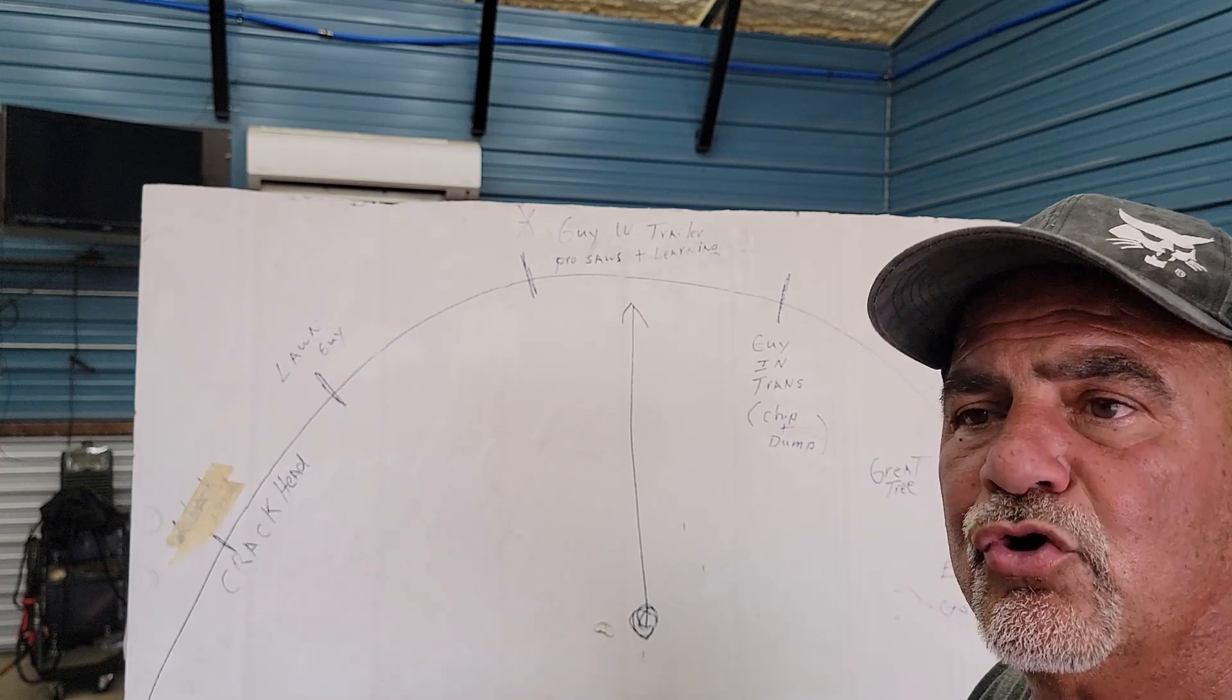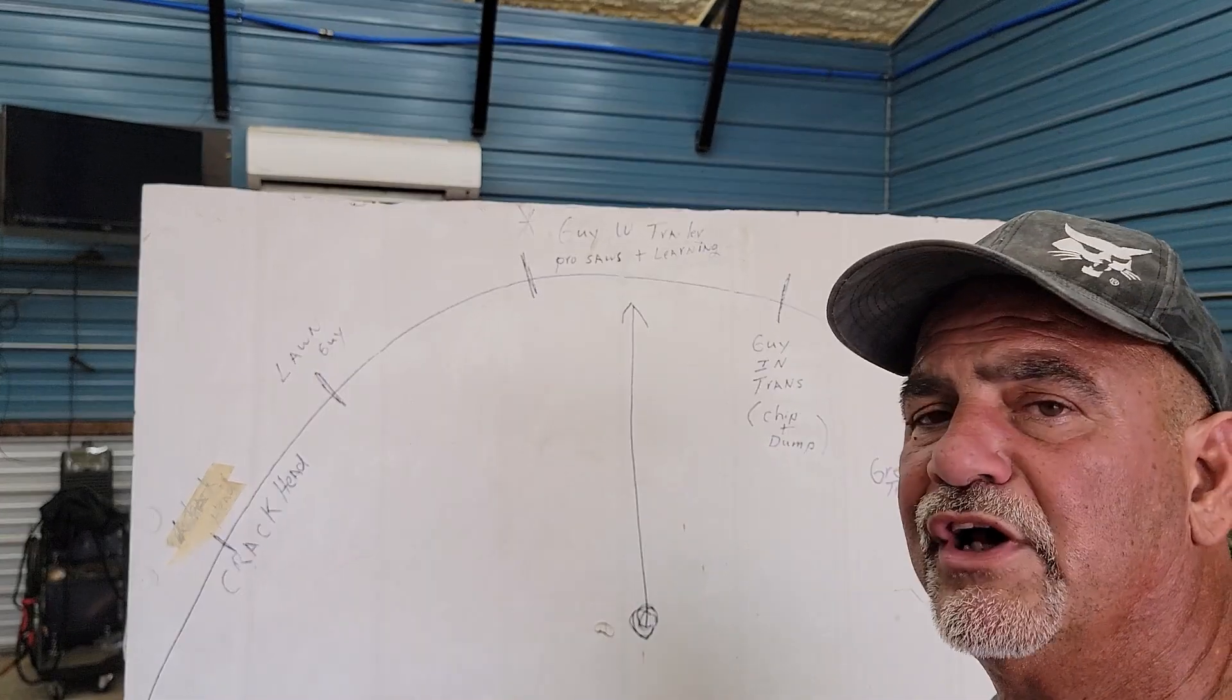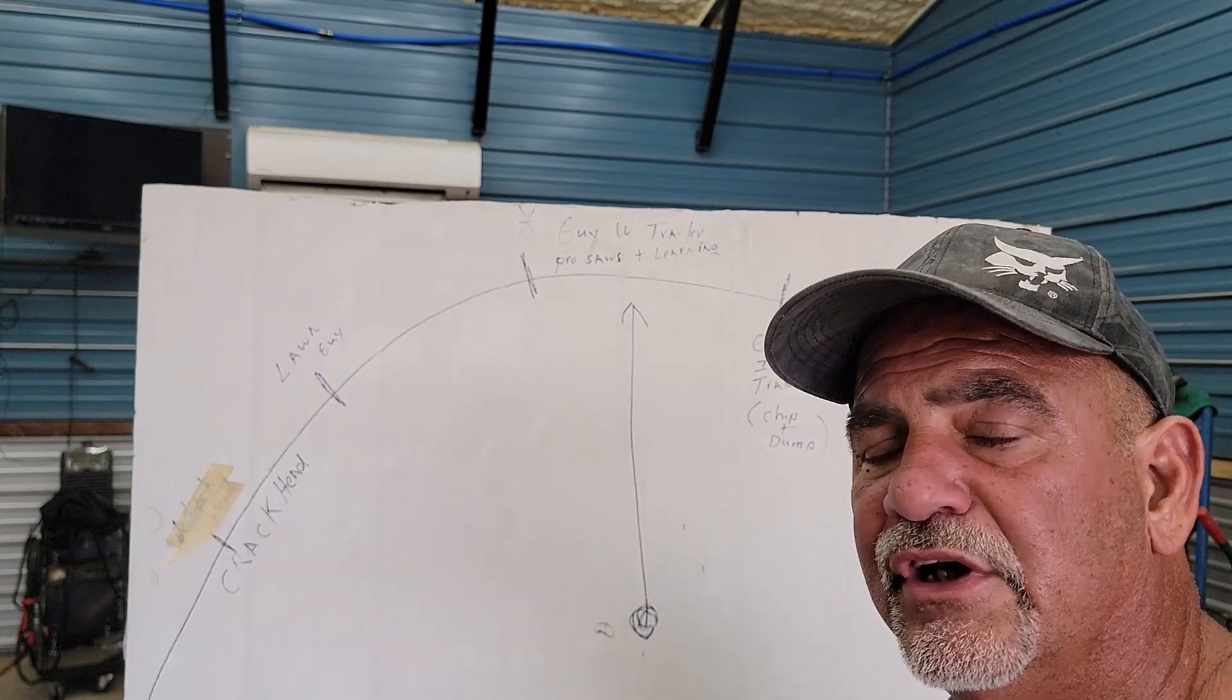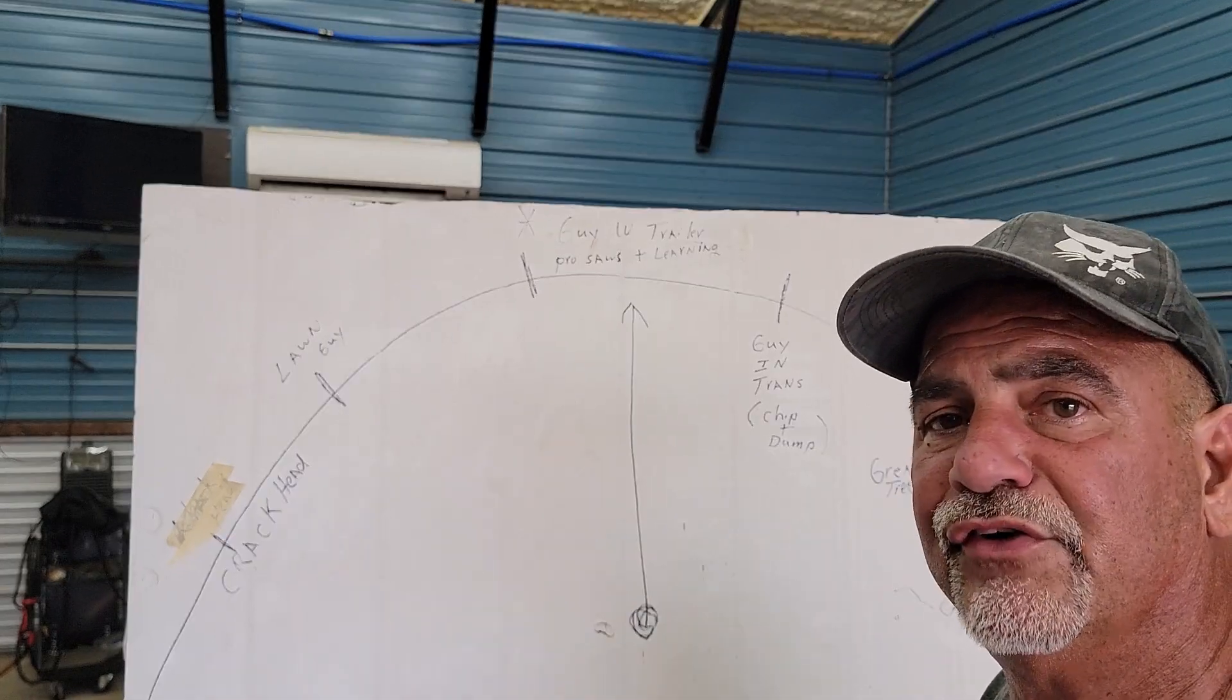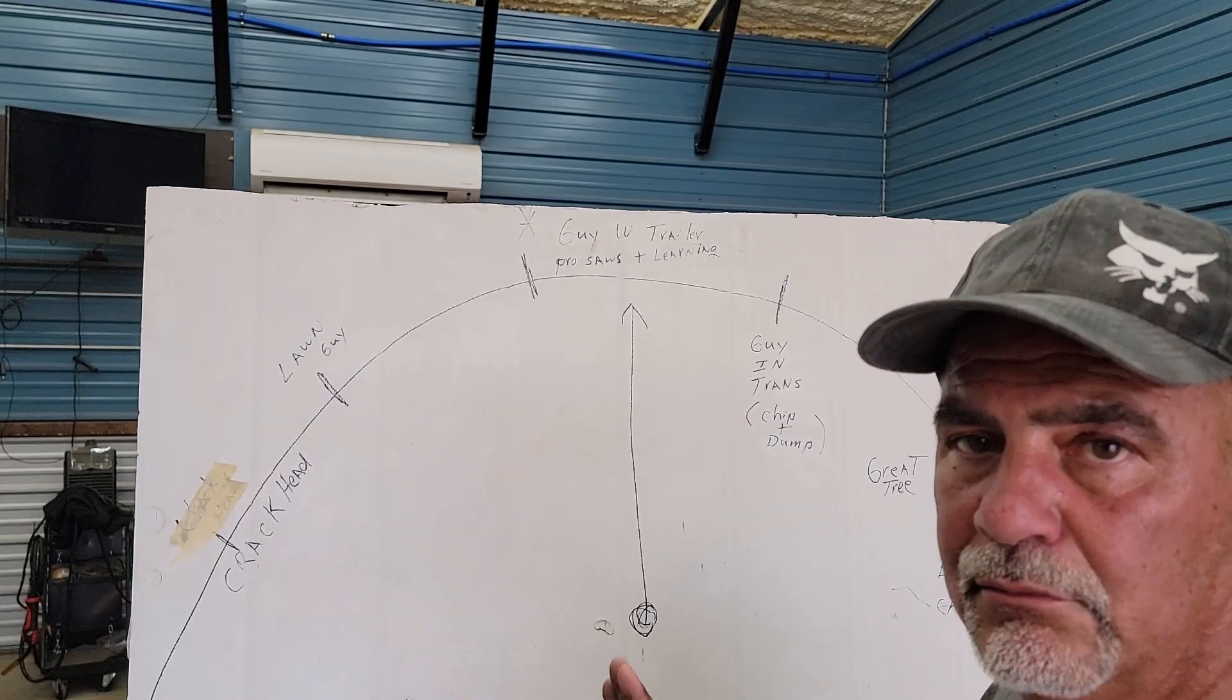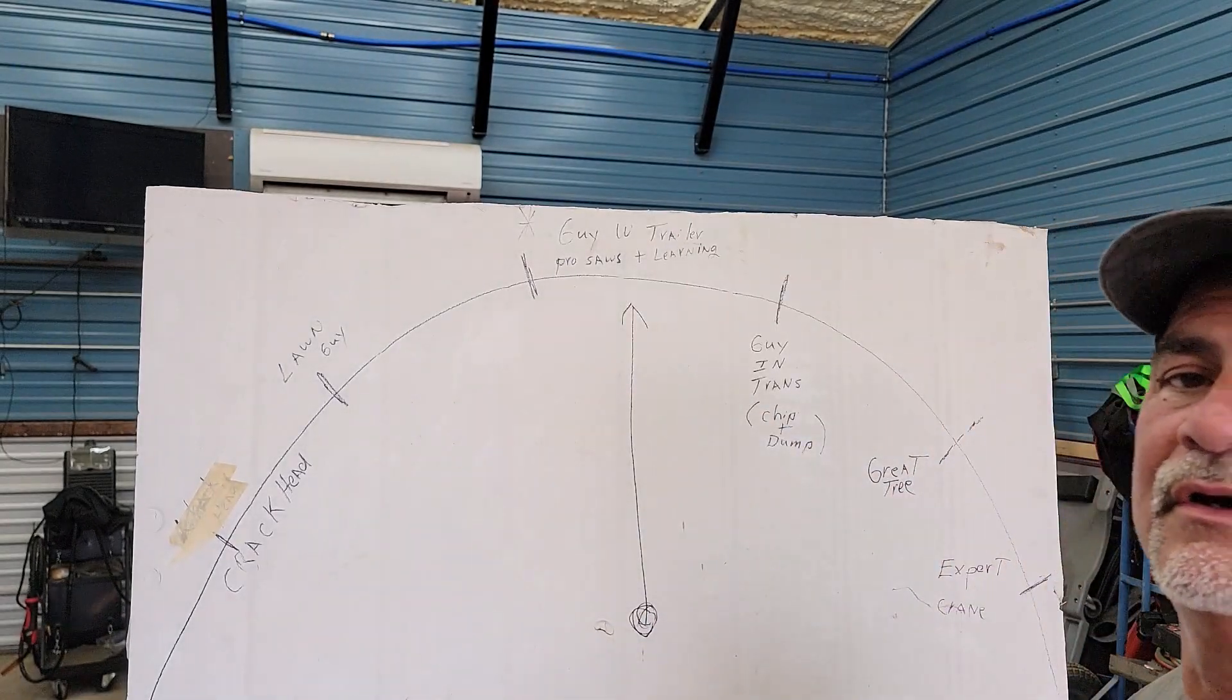Every year he's buying some new equipment, maybe a newer saw, or he's taking some classes on proper rigging and felling. Maybe he worked for somebody and he's branched off on his own, he doesn't have a lot of money, but hey, he's got a pickup and a trailer. So that puts you right here in this gauge.